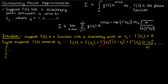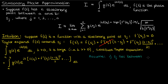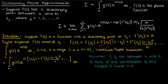Now we'll compute the integral from a to b of g(t) times the exponential of ik times f(t), where we'll assume that k is some large positive number. We'll substitute in the Taylor expansion of f(t). At this point I'm going to make two assumptions. The first is that s_j lies strictly between the limits of integration a and b, not at an endpoint. The second assumption is that most of the contribution to this integral is found in the neighborhood of s_j. Let me explain why this second assumption is justified.